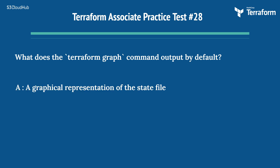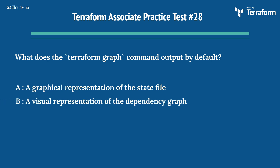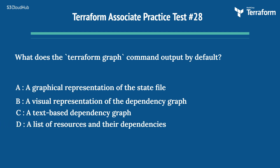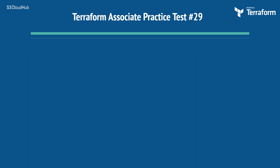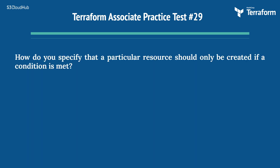The twenty-eighth question: what does the Terraform Graph command output by default? Options are: A) a graphical representation of the state file, B) a visual representation of the dependency graph, C) a text-based dependency graph, D) a list of resources and their dependencies. The right answer is Option C, a text-based dependency graph. By default, Terraform Graph outputs a text-based dependency graph.